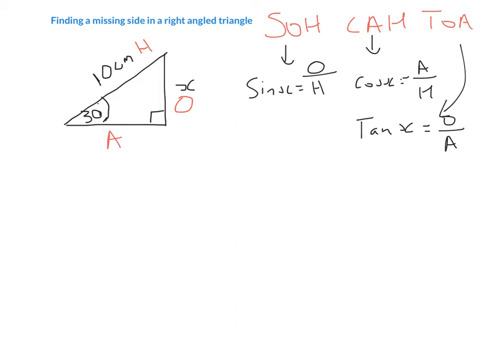Step two is we are going to circle everything that we know about this right angle triangle and everything that we want to know. So, I know that H is 10 centimetres. I know that we have an angle of 30 degrees. And I'm trying to find out side O, which is labelled as an X. People may look at this now and say, well, what about A? Well, actually, in this case, the adjacent is irrelevant. It doesn't help us, so we forget about it.